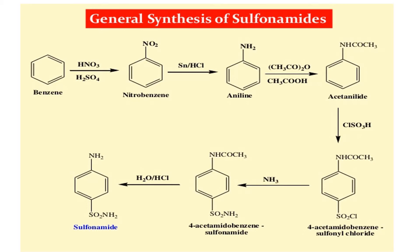A chlorosulfonation reaction using chlorosulfonic acid will be carried out on the acetanilide in order to give you para-acetamidobenzene sulfonyl chloride. This intermediate will react with ammonia and water in order to synthesize para-acetamidobenzene sulfonamide, giving you a sulfonamide group. Then acid hydrolysis of the acetamidobenzene sulfonamide will finally give sulfonamide.